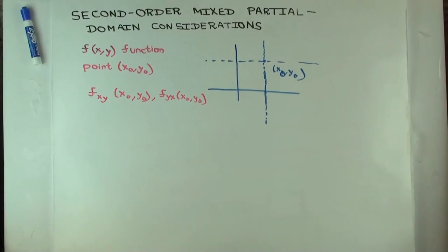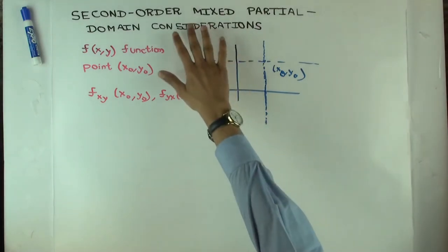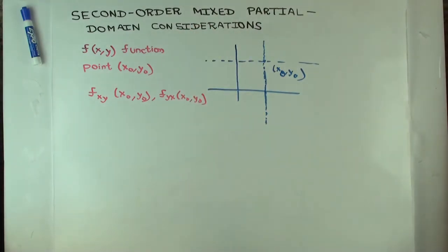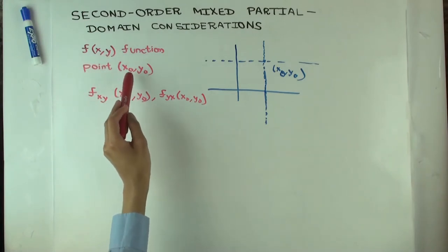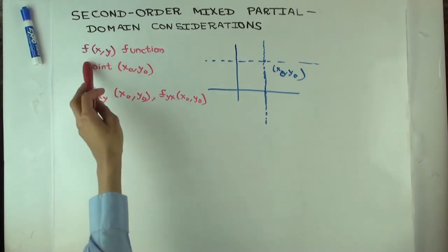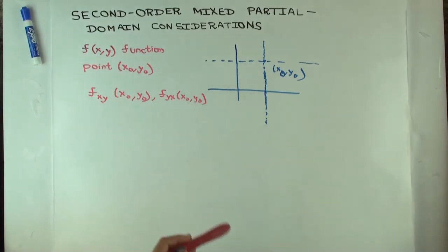Okay, so in this talk I'm going to consider some issues related to the domain of definition for the second order mixed partial. Here we have a function f of two variables, x and y, and we have a point x₀ comma y₀, which we'll assume is in the domain of f. If it's not, there's not much point of doing what we're doing.